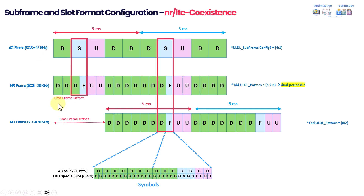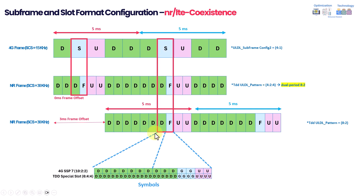The first solution is to shift by three milliseconds using the 8-2-2 pattern. The second solution keeps a zero frame offset but changes the slot pattern to 4-4 — meaning three downlink, one flexible, and two uplink, then four downlink repeating. This also achieves complete alignment. Regarding the special subframe alignment: the 4G special subframe has 14 symbols in one millisecond, while each 5G slot has 14 symbols as well, since 5G slots are half a millisecond with 30 kHz SCS.